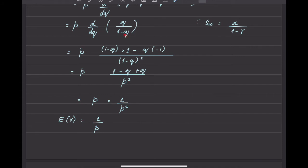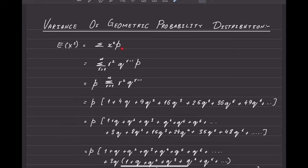I differentiate q upon 1 minus q using the quotient rule — v into u prime minus u into v prime, all over v squared — and after simplification it gives 1 upon p squared. Multiplied by p, this becomes 1 upon p. Hence the expectation of a geometric probability distribution is equal to 1/p.